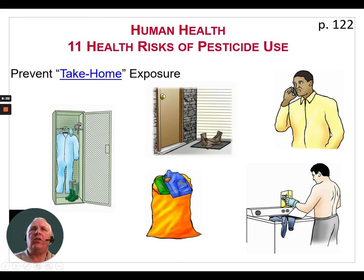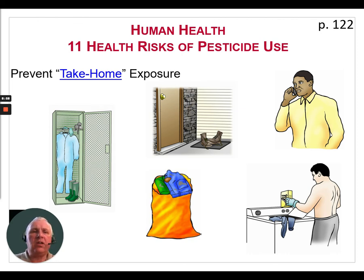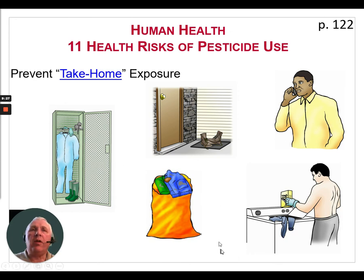Another thing to consider is take-home exposure. Research studies have shown that family members can easily be exposed to pesticides without realizing it. To prevent take-home exposure: clean items like door handles, steering wheels, water taps, and telephones — if you touch them with gloves that have had pesticides on them, you could accidentally expose someone else. Vacuum vehicles to remove pesticide residues. Remove your protective clothing before getting into your truck, car, or tractor — otherwise you can leave traces of pesticide inside. Keep clothing contaminated with pesticides away from family laundry; store it safely until it can be washed separately. Follow the instructions given on the protective clothing and personal protective equipment section of the manual.